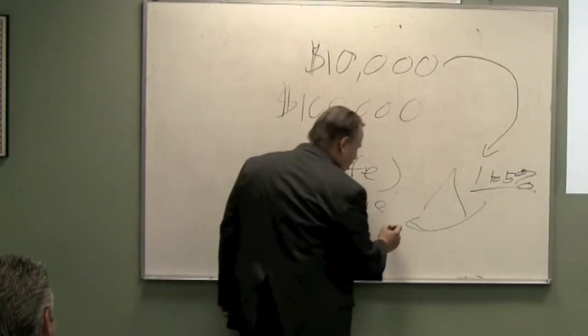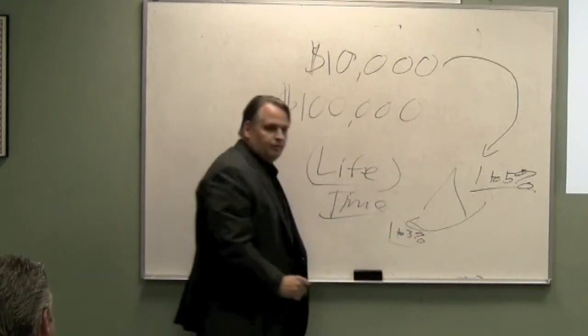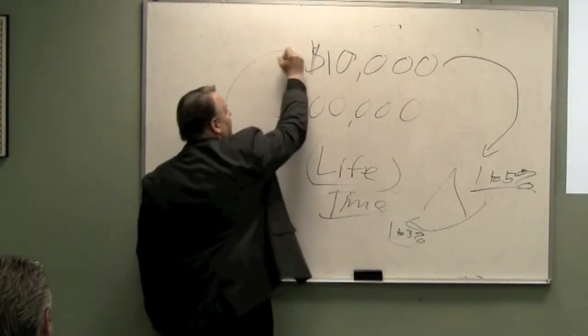Then the number of the 1% to 5% that we convert to clients would probably be smaller. Let's say 1%, 2%, 3%. Then after we do that, what do we get to do? Repeat the entire process.